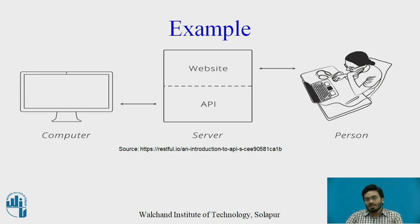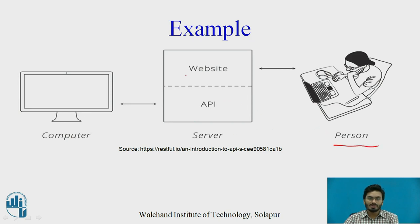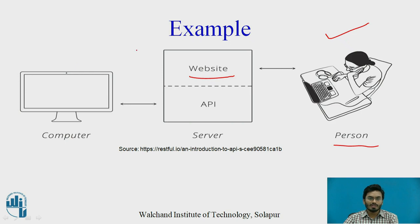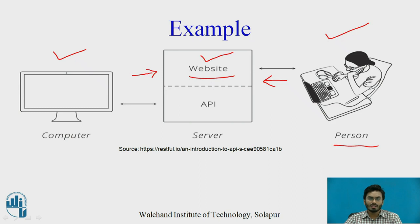Let's try to understand what is an application programming interface with the help of a simple example. As you can see, we have a person here who is trying to access a web resource — let's say he is trying to access his email by going to the website Google. This is client number one, and you can consider there are other computers and other clients who are actually trying to access this particular website through an internet connection. So this is client number one and client number two, as you can see, and both these clients are trying to access this particular website. Now, let us say that this website is asking for a login — for example, just imagine you are trying to access the Gmail portal with your own username and you are first prompted to enter your credentials like username and password.